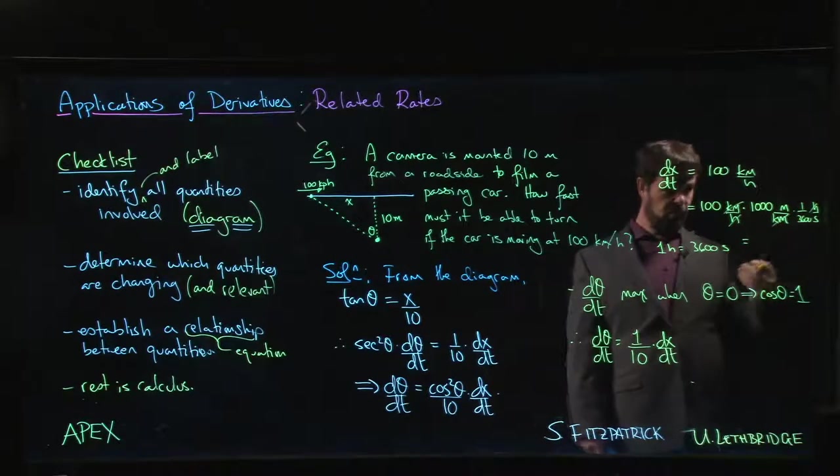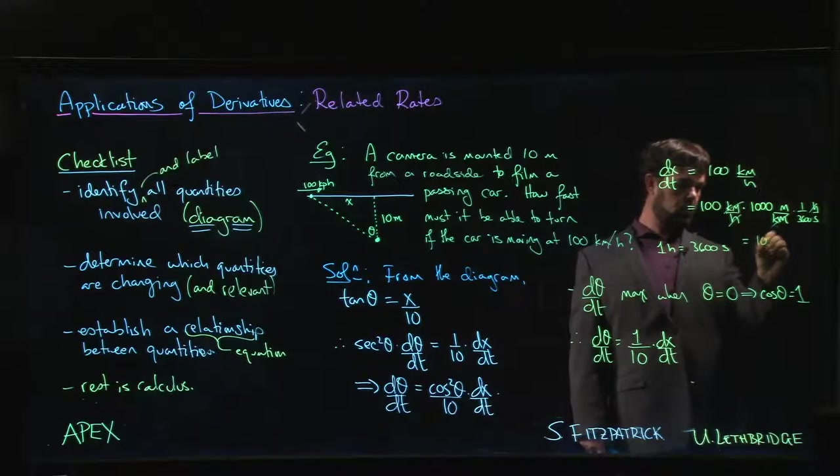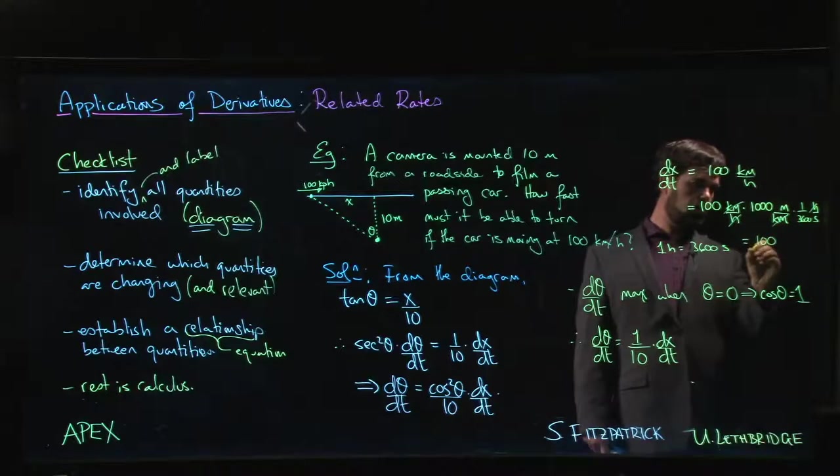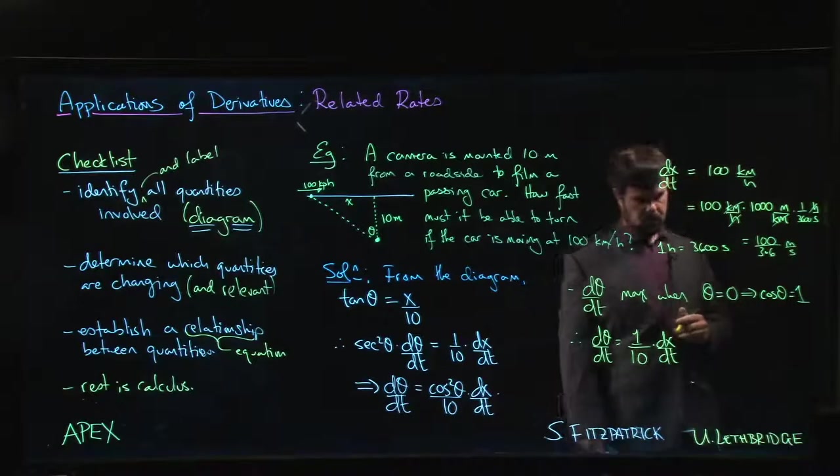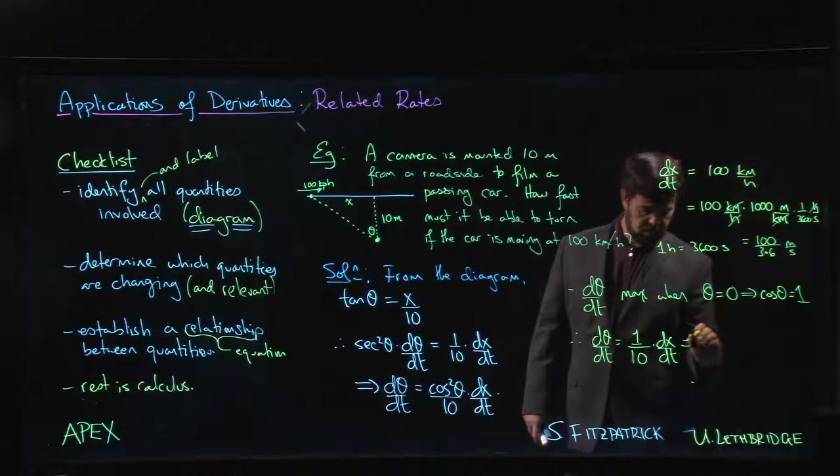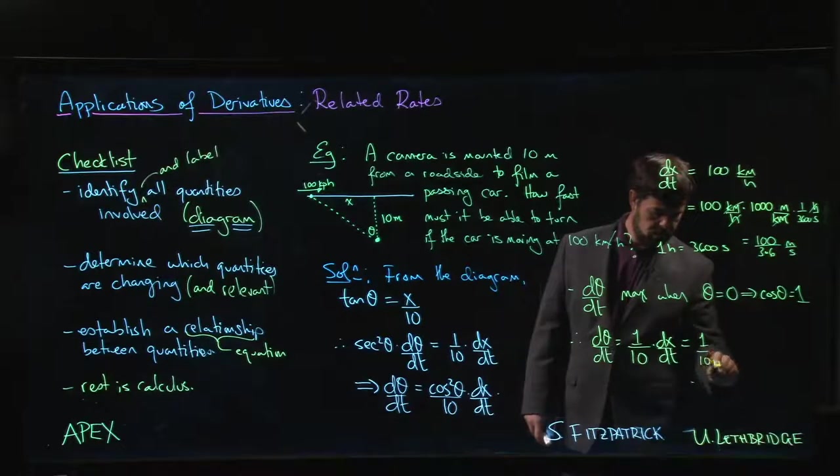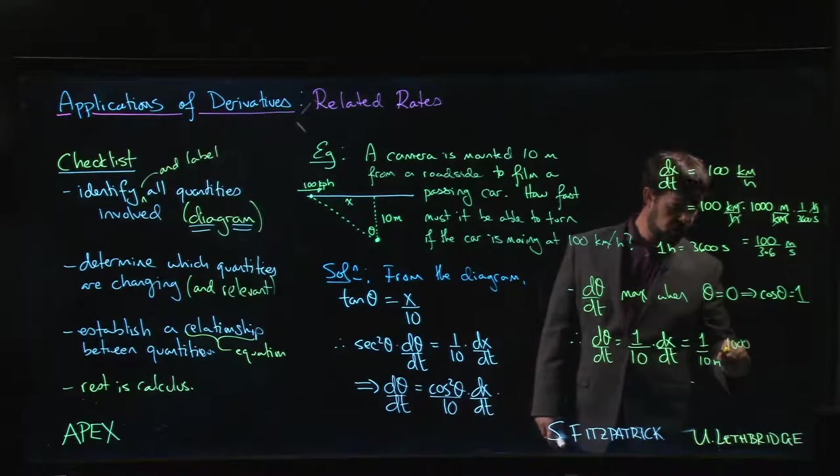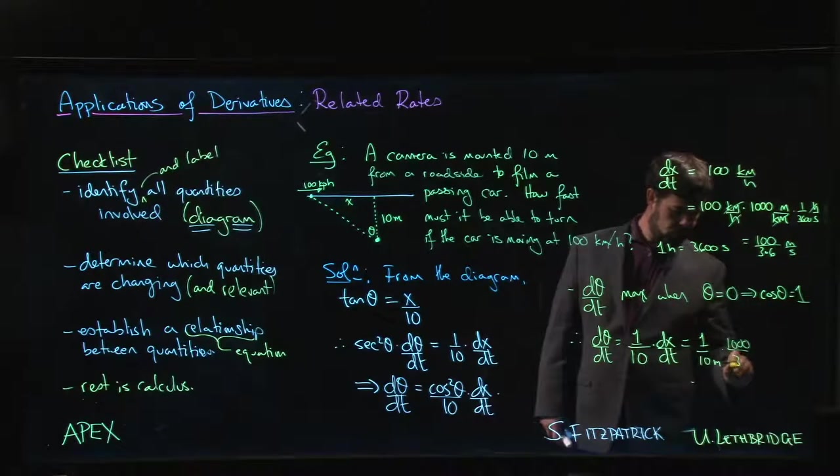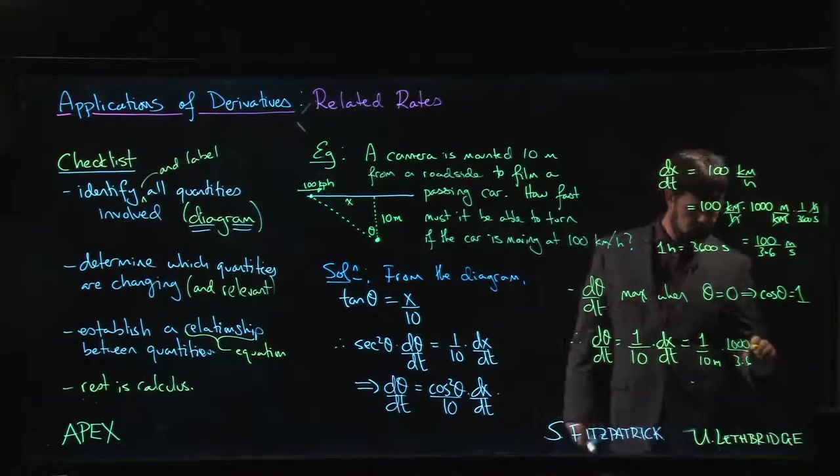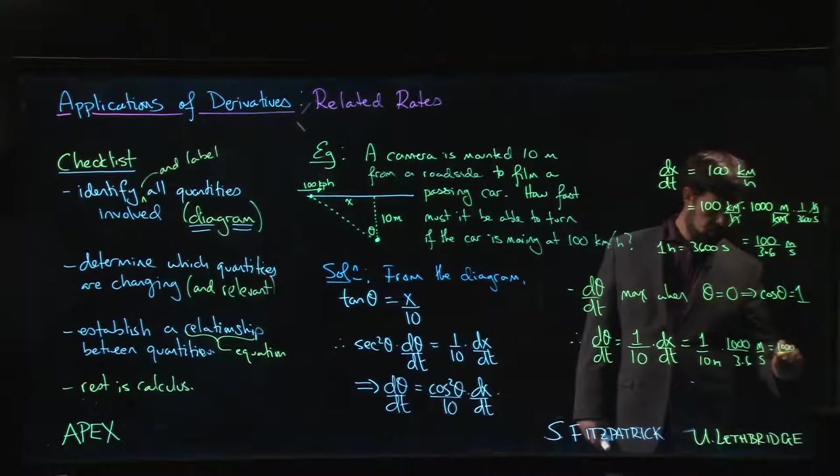So 1000 over 3600, it's going to be like 3.6 meters per second. Now we can put that in here. This is 1 over 10 meters times 1000 over 3.6 meters per second, and we get 1000 over 36.